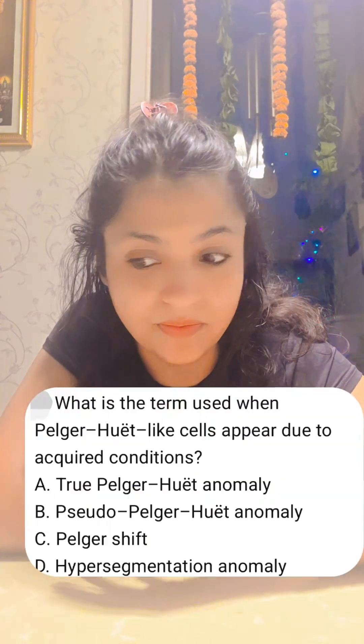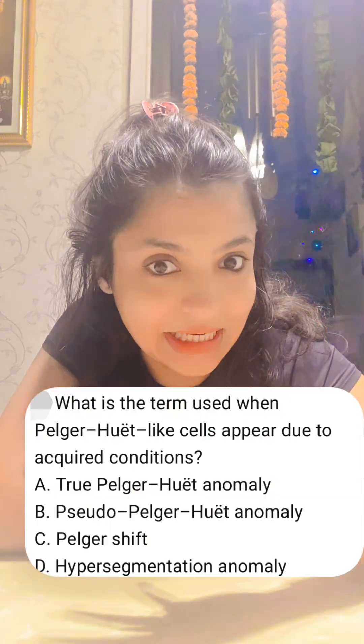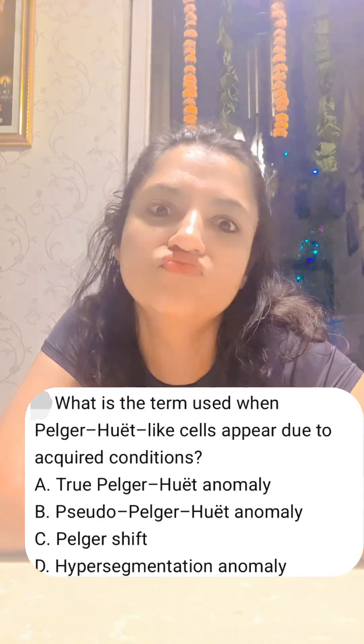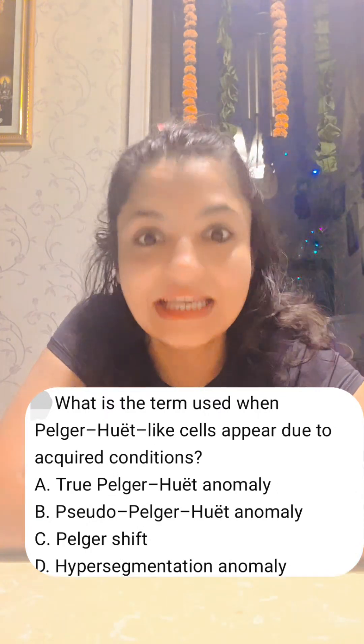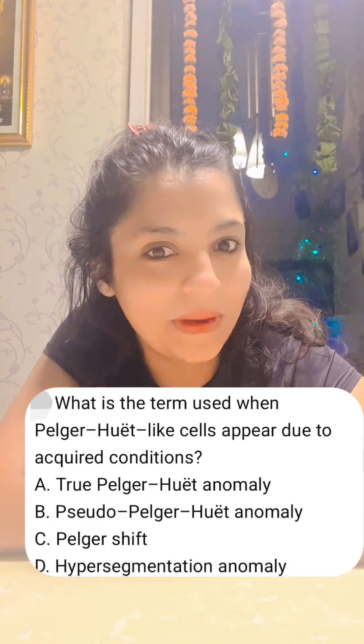It is due to a mutation of the lamin B receptor — this is a common exam question. Can you also acquire it later in life? Yes, and that is called pseudo Pelger-Huët anomaly.